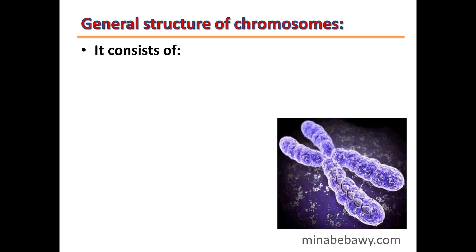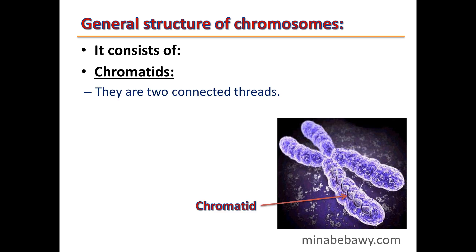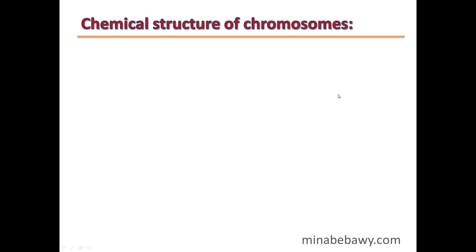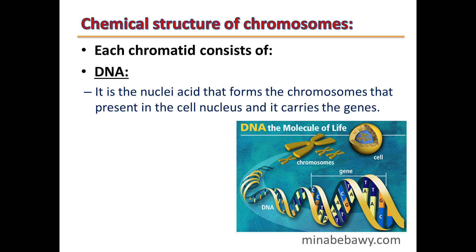The general structure of chromosomes: chromosomes consist of chromatids — two connected threads — and a centromere, which is the point of connection of the two chromatids during cell division. Each chromatid consists of DNA, which is the nucleic acid that forms the chromosomes present in the cell nucleus and carries the genes, as well as proteins. So the chemical structure of chromosomes is DNA and protein.